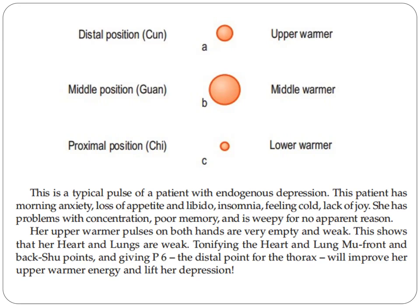Her upper warmer pulses on both hands, at the distal position, are very empty and weak. This shows that her heart and lungs are weak. Tonifying the heart and lung front-mu and back-shu points, and giving pericardium 6 as a distal point for the thorax, will improve her upper warmer energy and will lift her depression.